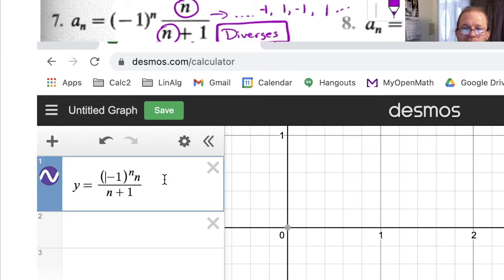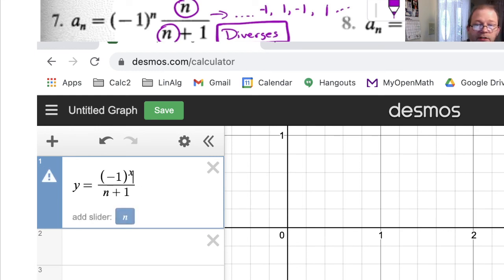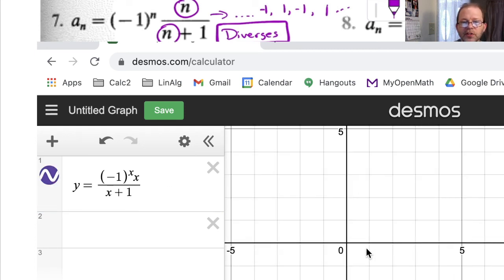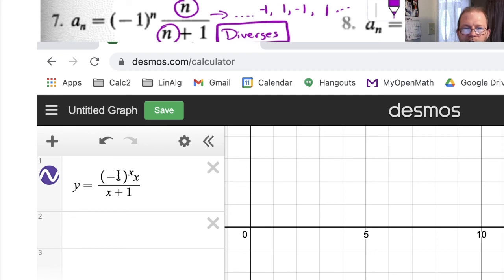Yeah, it can't even, oh, it doesn't like the n's. Negative 1 to the x times x over x plus 1. Yeah, it still won't graph it. The reason is when you start raising negative 1 to x, there are certain values of x that are going to break it. Like if you put in, if x were 1 half, you'd get an imaginary number here. And that would also happen at 1 fourth, 1 eighth. It would happen at infinitely many places. And that's why Desmos isn't graphing that one for us.